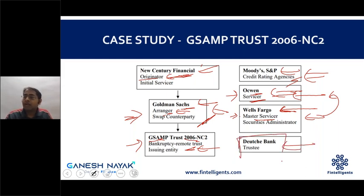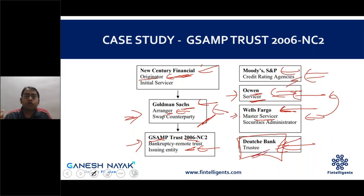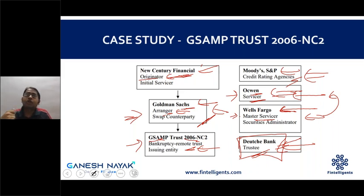Cash flows would pass from the master servicer to the sub-servicer, to the government-sponsored entity, and then to the investor. Deutsche Bank was also involved as trustee — responsible for overseeing the entire structure and acting on behalf of investors if there was any manipulation or problem. This was the Goldman Sachs case study from 2006-2007.